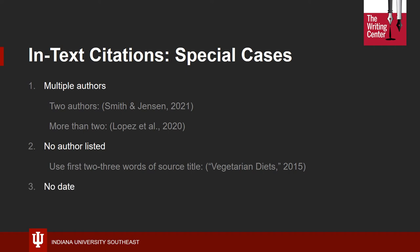Sometimes you may have an author but can't locate a date for the source. If this is the case, simply write "n.d." in place of the date, separated by periods. You should strive to use sources that do contain both named authors and listed dates, as they are important parts of establishing your credibility as a researcher, but it is okay to use these sources sparingly if they appear credible otherwise.